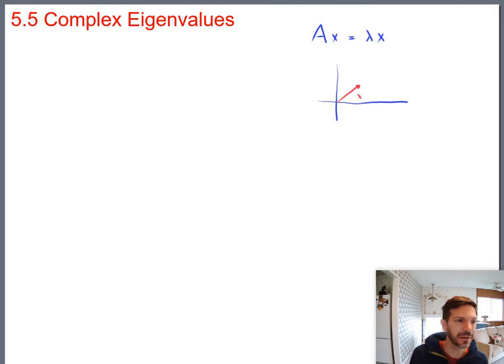So suppose that lambda X is going to have to look something like this. Maybe it makes it like one, two, three, three and a half times as long or something. So that could be lambda X and also the matrix times X.